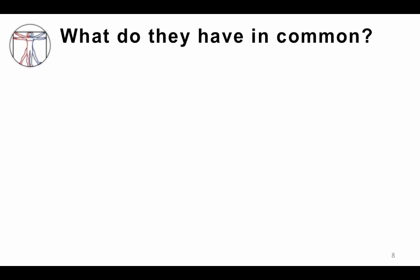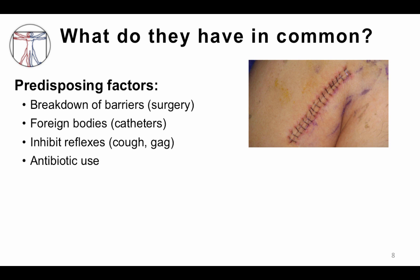What do healthcare-associated infections have in common? Predisposing factors often involve the breakdown of normal barriers. A clear example is surgery — your skin is an outstanding barrier to infection, but surgery opens up that normal defense and may allow bacteria in. Placement of foreign bodies like blood catheters through the skin or Foley catheters into the bladder similarly creates risk. Inhibition of normal reflexes like the cough and gag reflex also increases the risk of lung infections, and antibiotic use itself increases your risk of some infections.